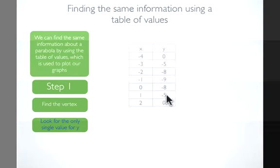A y of negative 5, there are two of them. A y of 8, or negative 8, there are two of them. But there's only one negative 9. Since there's only one negative 9, this must be the vertex. The vertex, then, is at negative 1, negative 9.